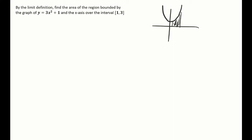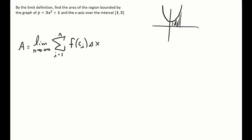By our formula we know that area equals the limit as n approaches infinity of the summation from i equals 1 to n of f of c sub i times Δx. This makes sense because f(c_i) is the height of one rectangle and Δx is the base or width of one rectangle.